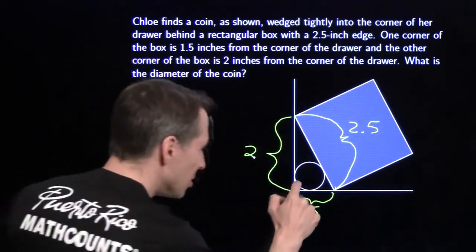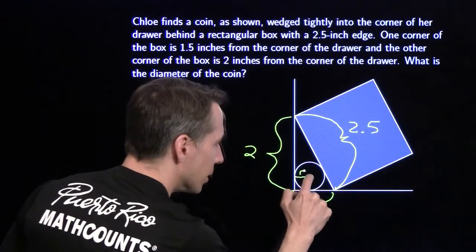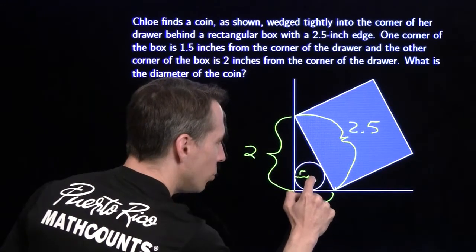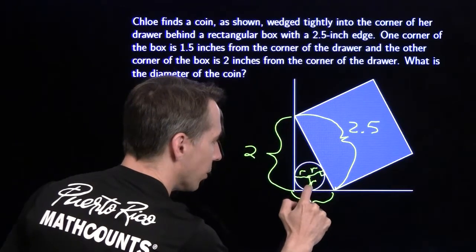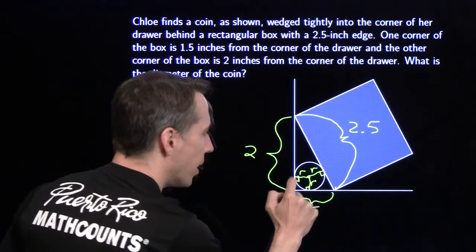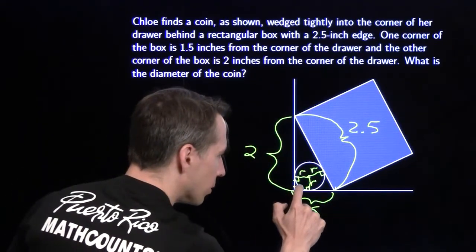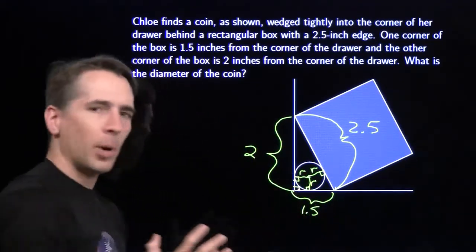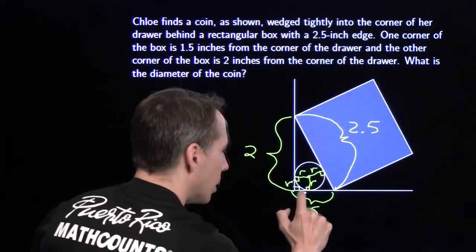When I have a circle that's tangent to some lines, I like to draw in the radii to those points of tangency, because that gives me right angles here. Right angle there, right angle there, right angle there. And of course this is a corner of my drawer. There's a right angle right here as well. This little box there, that puppy's a square.